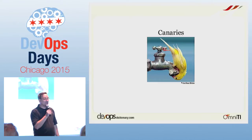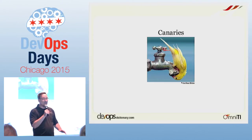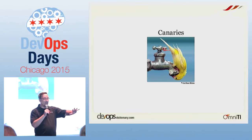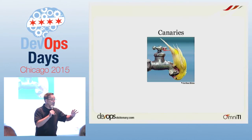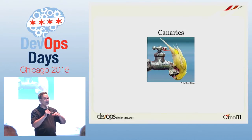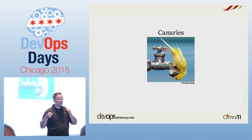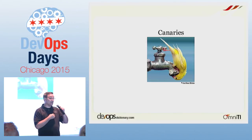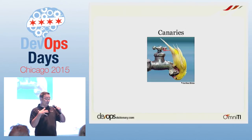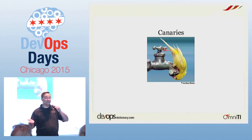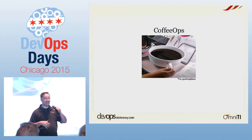Canaries comes from deployment testing. The idea is that when you do a deployment, you deploy to a small group of servers and see how it goes, and if it goes well, then you deploy to the rest. The term comes from old-time miners who would bring an actual live canary into coal mines — the little bird's tiny lungs would die if it encountered methane or bad mine gas. It would die first, so you knew all the humans had to get out.